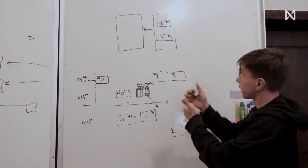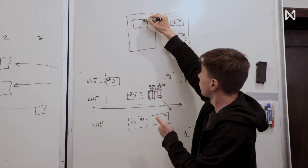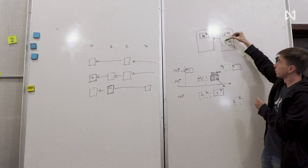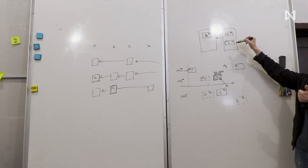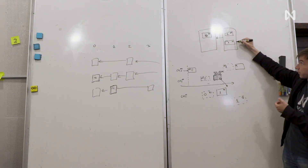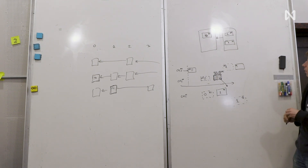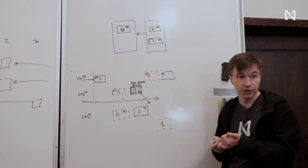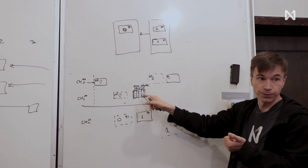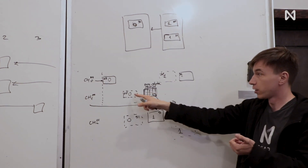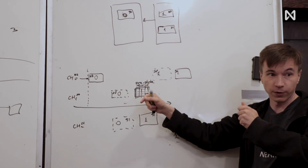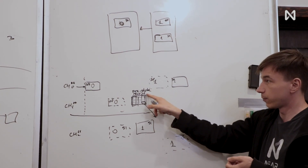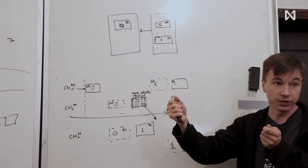This guarantees one-block cross-shard transactions. The receipt created as a result of applying chunk zero will be processed as of the time chunk one is applied — there's exactly one block between the first and second hop of the transaction. If it sends a further cross-shard transaction, that will also be applied in the very next block. Moreover, we guarantee that receipts don't get lost — a problem many sharded blockchains face. If the receipt is not sent, if it's not part of the Merkle proof, that's a slashable behavior, because every other participant in the same shard chain will also apply the chunk, compute the Merkle proof, and verify it cryptographically.